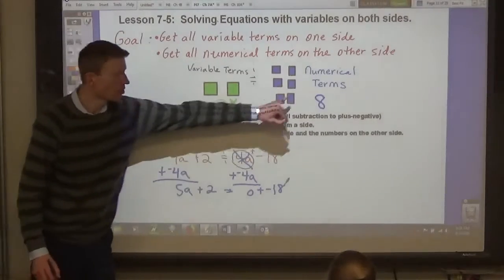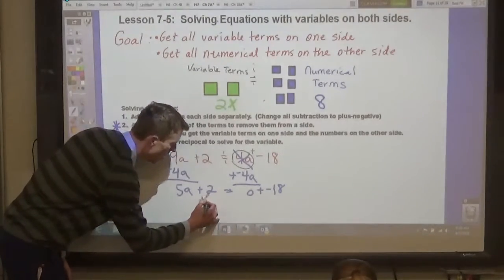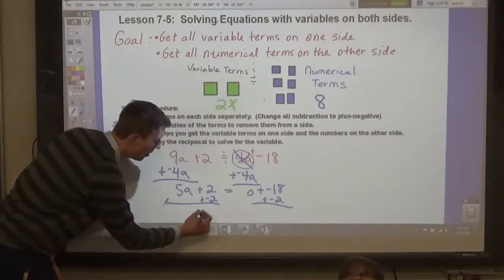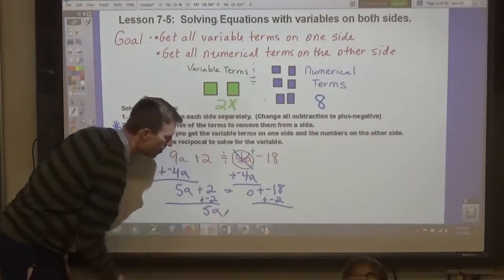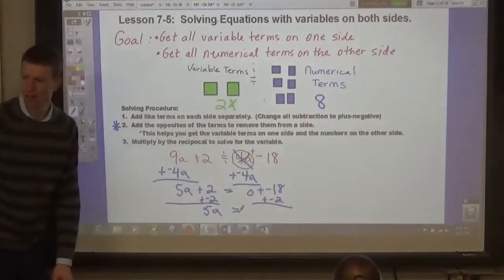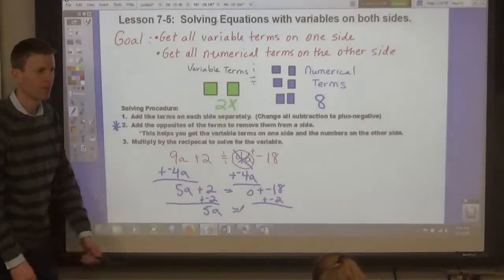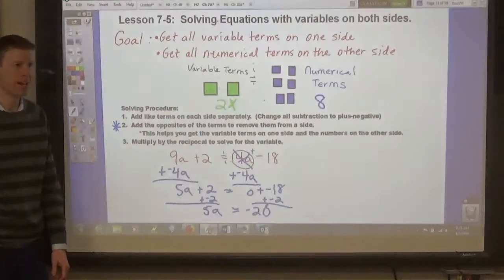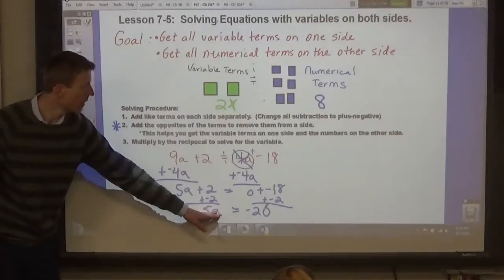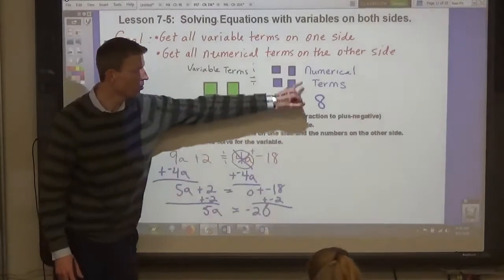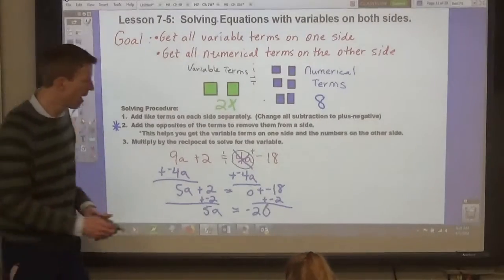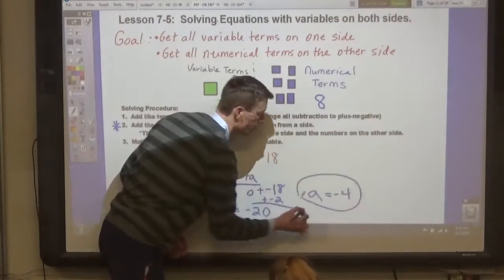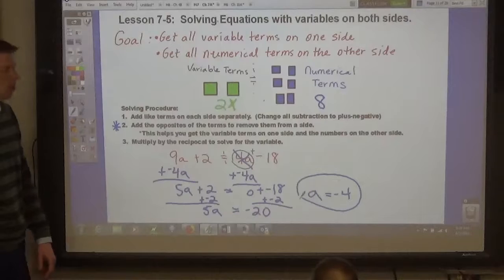Then, we need to get the numerical terms all on one side. So, add negative 2. Now, we have 5a equals what? 5a equals, Danny? Negative 20. Negative 20. Right. And now you can find a. You've got the variable terms on the left side, and you've got the numerical terms on the right side. So, multiply and divide. Divide everything by 5. a equals negative 4. Any questions on this one?